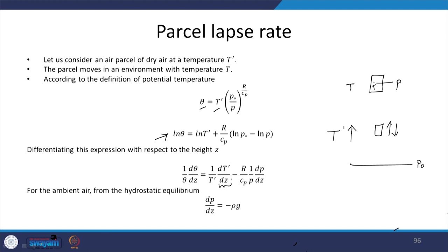This lapse rate tells you how the temperature changes inside the air parcel, subject to the condition that the air parcel is adiabatic in nature with no exchange of heat, and it is at the same pressure as the surroundings. This derivative gives R by Cp; since P naught is a constant that term is 0, and the derivative of minus log P gives 1 over P times dP by dz. For ambient air, hydrostatic equilibrium gives dP by dz equals minus rho g, which tells you how the pressure of the ambience changes with height.